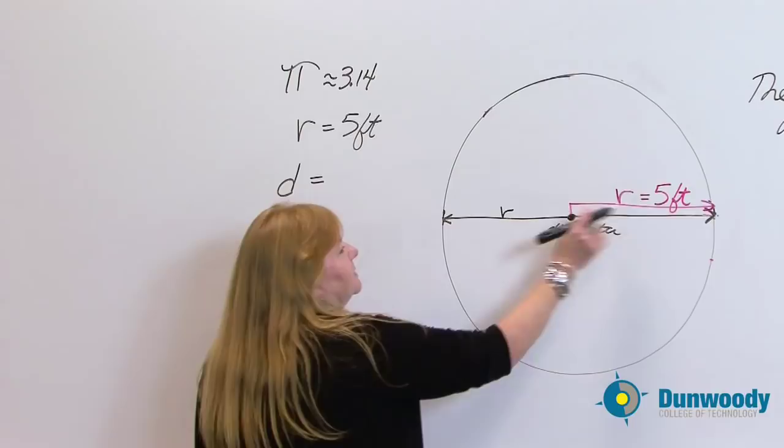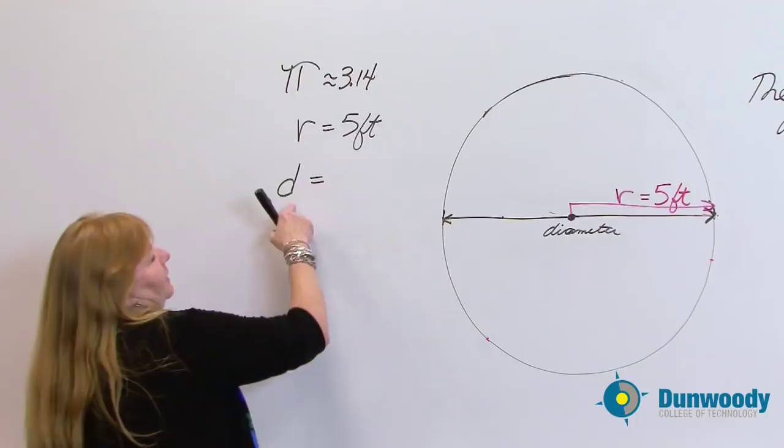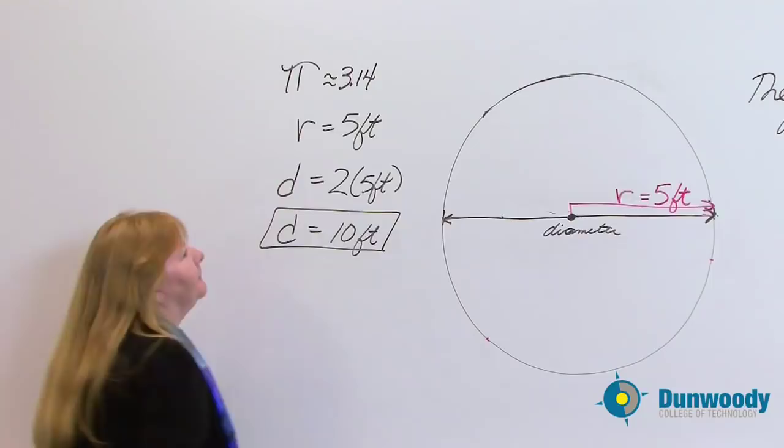So now that we've got that in place, let's play our game. Now, diameter is indeed 2 times the 5 feet. So that was easy. Diameter is just 10 feet. And many times you just do that in your head.